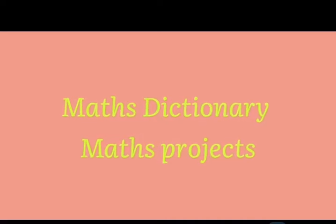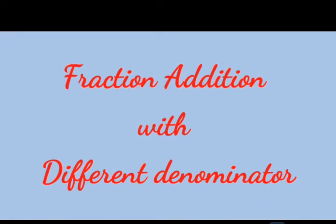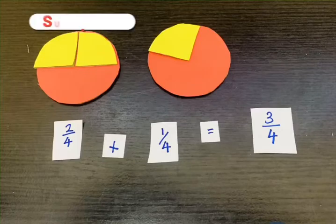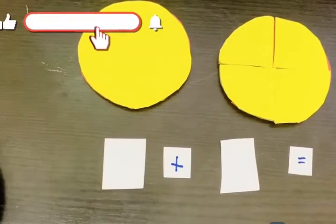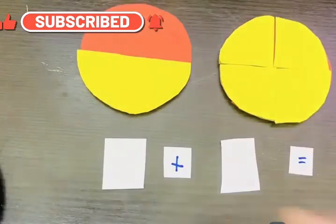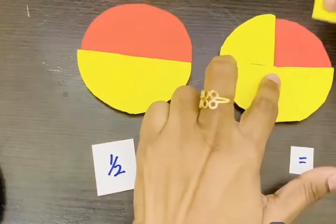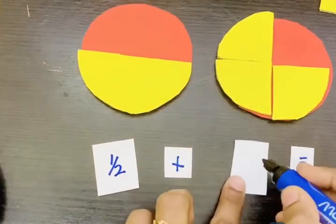Hi everyone, welcome back to Max Dictionary. This video is about a math project topic on fraction addition with different denominators. First, I am choosing two fractions: first one is 1 by 2, and the next one is 1 by 4.